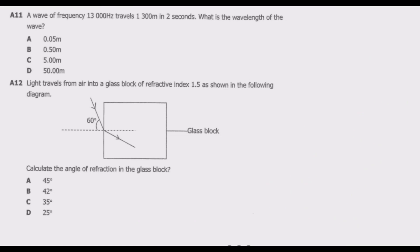Let us look at question 11. A wave of frequency 13,000 Hz travels 1,300 meters in 2 seconds. What is the wavelength of the wave? When talking about wavelength, you're talking about the distance between two successive crests or troughs of a given wave. We know the relationship is that velocity equals wavelength multiplied by frequency. The question asks us to find the wavelength, so we make wavelength the subject of formula, which equals velocity over frequency.